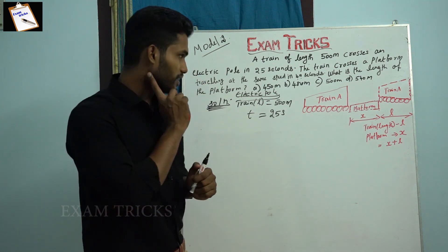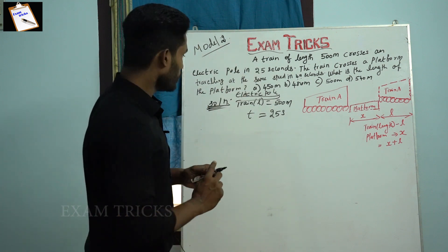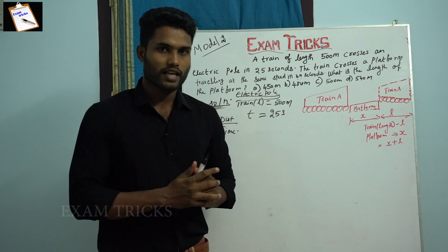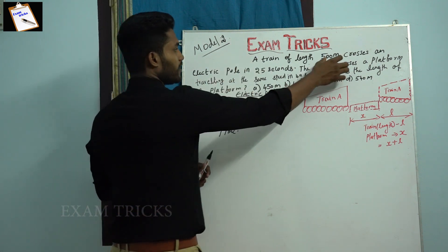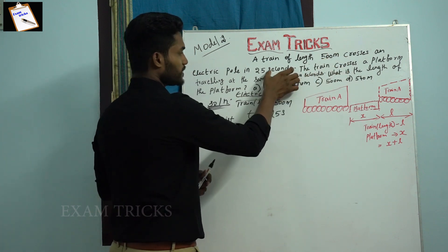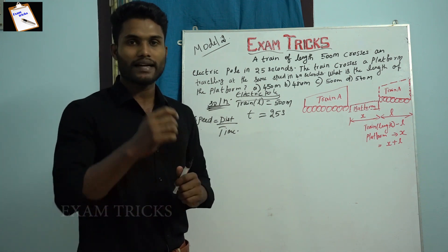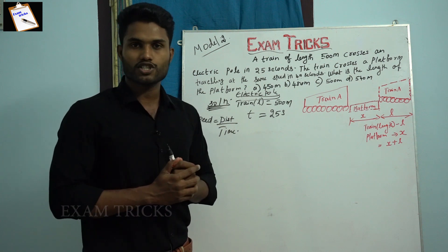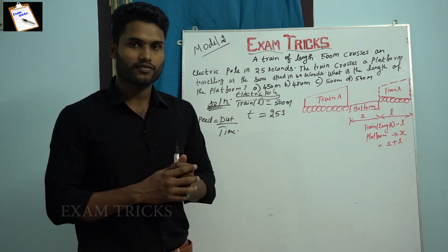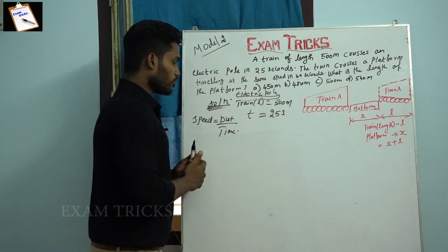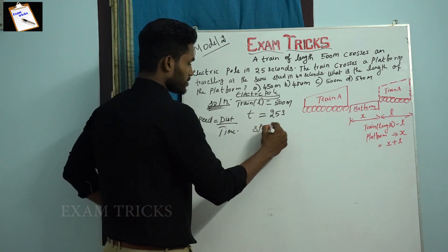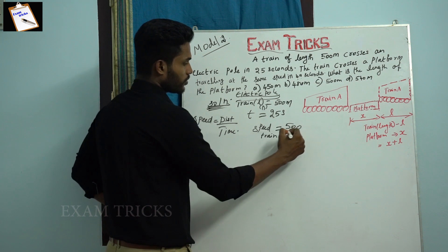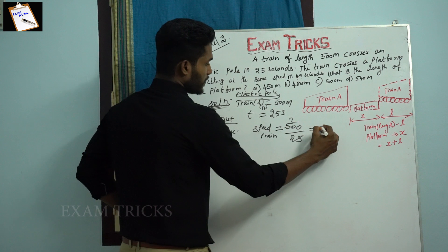We know that speed equals distance divided by time. Check that all units are correct — for example, meters per second or kilometers per hour — and convert using 5/18 or 18/5 if needed. Speed of the train equals distance divided by time, which is 500 meters divided by 25 seconds, giving a speed of 20 meters per second.